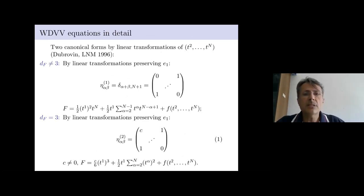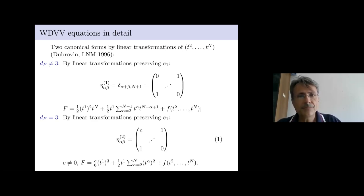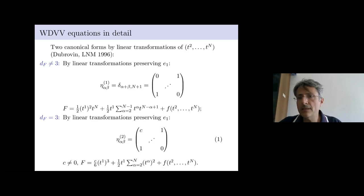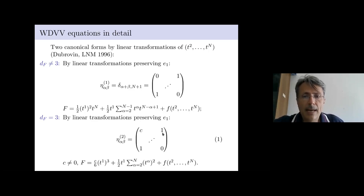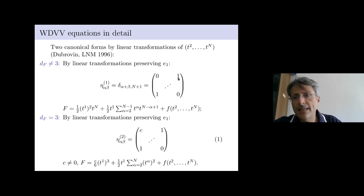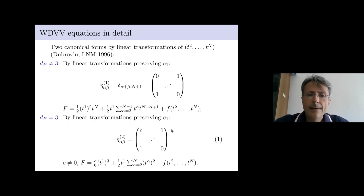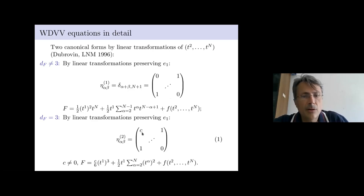The WDVV equations come with this unknown matrix of third-order derivatives called η. It was proved that invariance transformations — symmetry transformations of the WDVV equations — can bring the matrix η into two canonical forms. One is the purely anti-diagonal form, and the other is anti-diagonal, similar to the identity, with an extra first coefficient η_{11} which is a non-zero constant. In these two cases, F has forms completely specified by the third-order derivative with respect to t1 and the quasi-homogeneity requirement, while the dependence on t2 through t_N is concentrated in an unknown function f of N−1 variables.